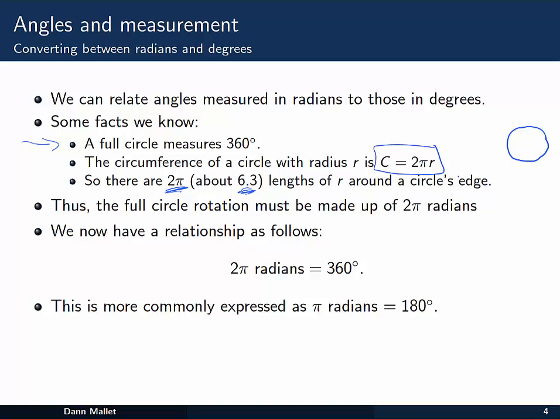Well remember that one radian is just a single radius length around the curve. So if we have 2π radius lengths around the curve, then that means that a full circle rotation must be made up of 2π radians of sweep around. So we've now got a relationship between the radian and the degree measurement. We can say that 2π radians is the same as 360 degrees.